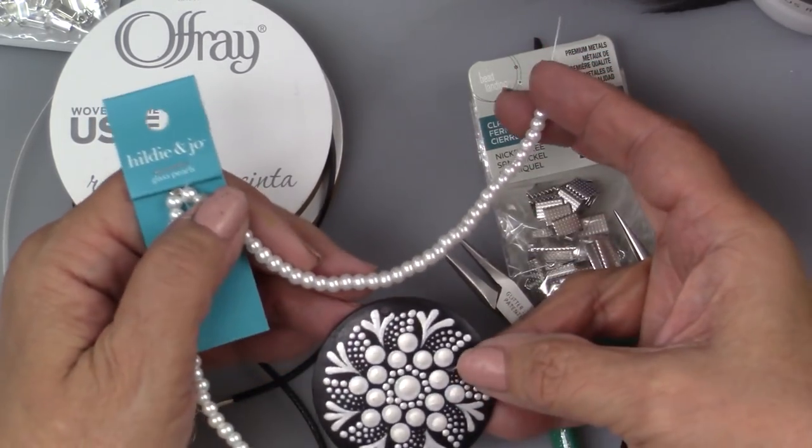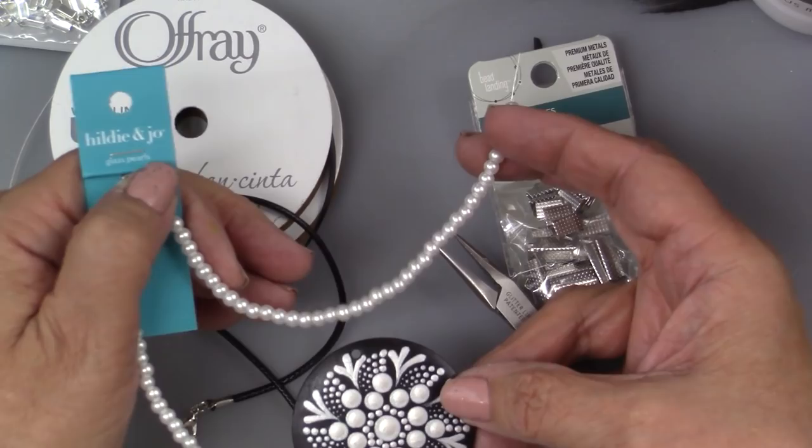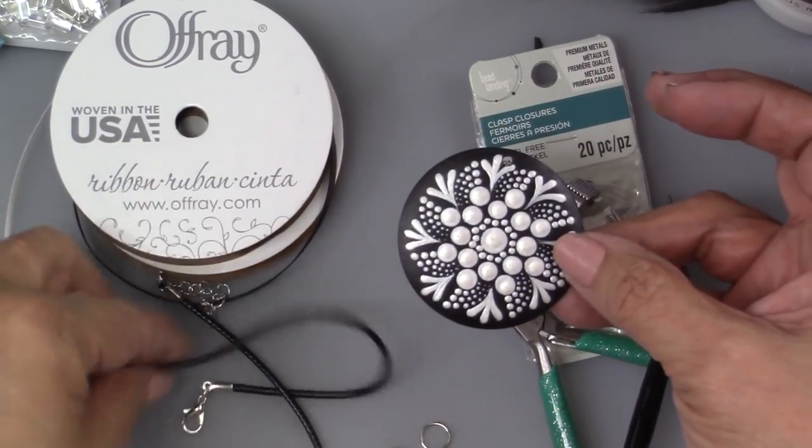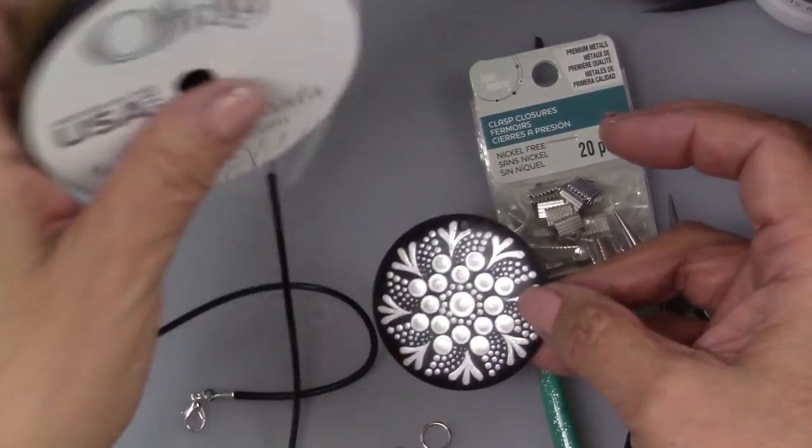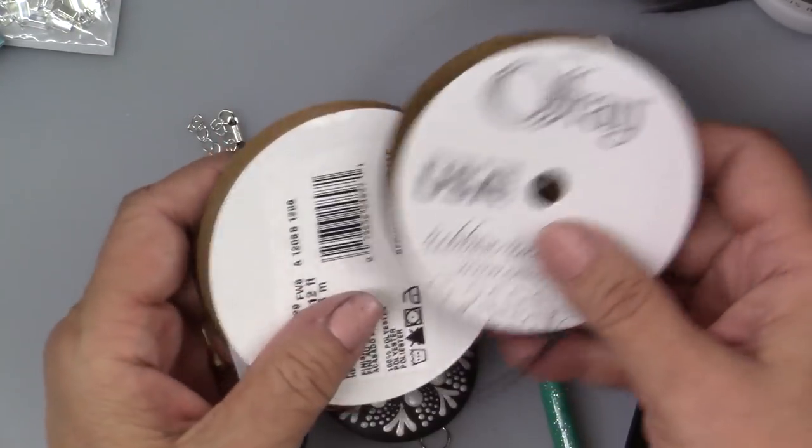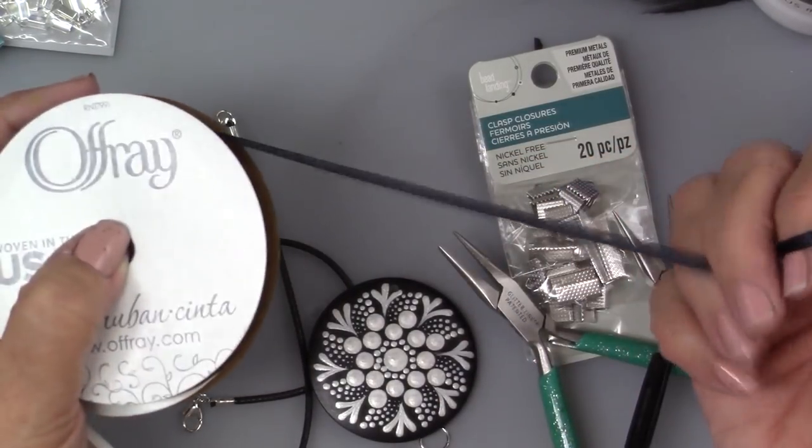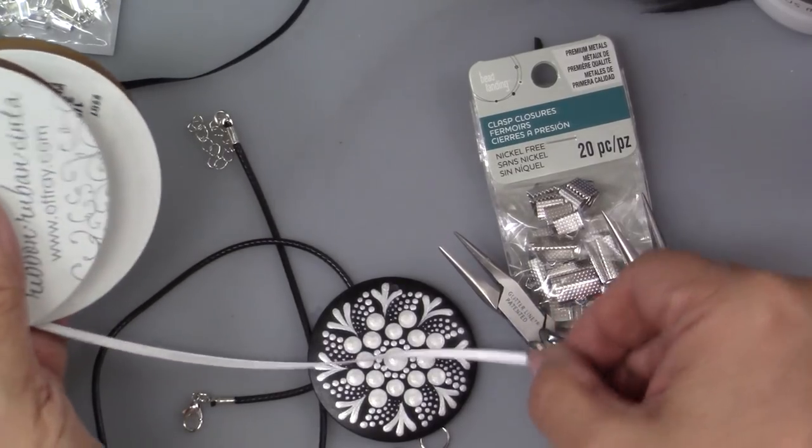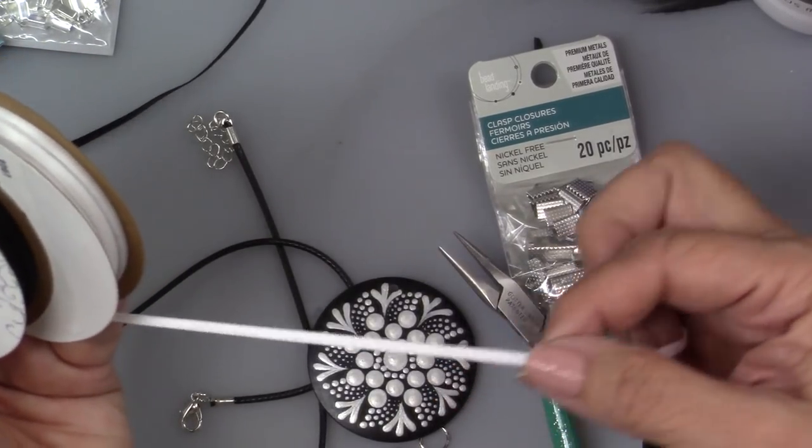I also got some of this ribbon. This is a really narrow ribbon. I got white and black because I thought that would look nice. I think, ultimately, I'm going to go ahead and use this ribbon.